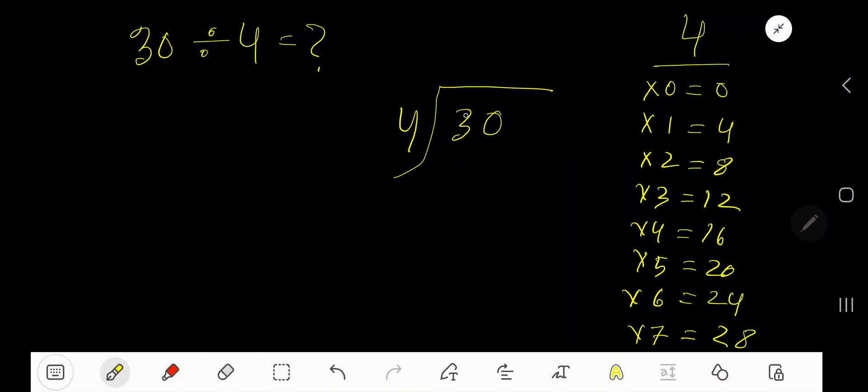30 divided by 4. Here 4 is a divisor, so we need the multiplication table of 4. 4 times 0 is 0, 4 times 1 is 4, 4 times 2 is 8. To find out the multiplication table of 4 easily, just add 4 with the previous step: 0 plus 4 is 4, 4 plus 4 is 8, 8 plus 4 is 12, 12 plus 4 is 16.